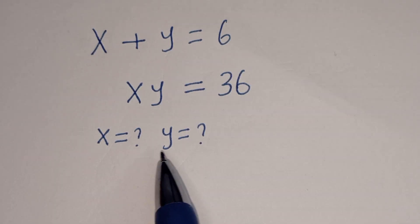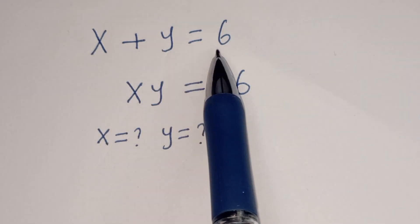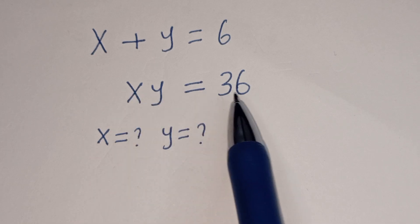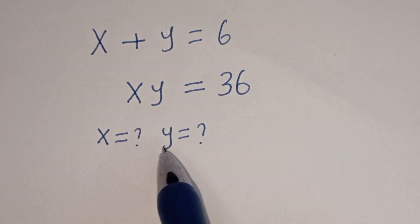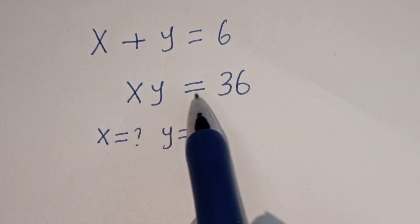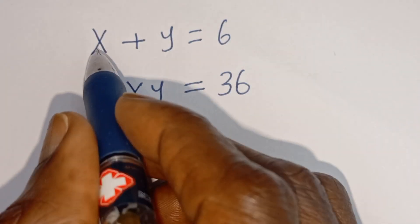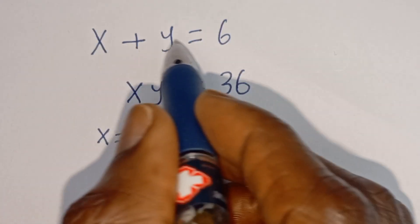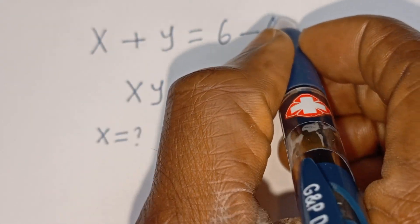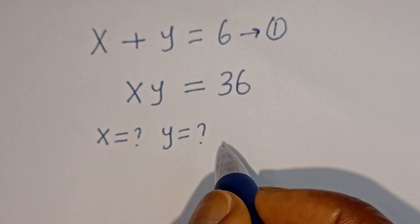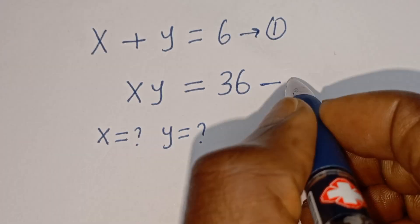Hello, how to solve for s and y in this problem: s plus y is equal to 6, and x y is equal to 36. We want to find the value of s and y. Please don't forget to like, share, comment and subscribe to my channel. Here s plus y is equal to 6 — let's call this equation 1 — and x y is equal to 36 — let's call this equation 2.